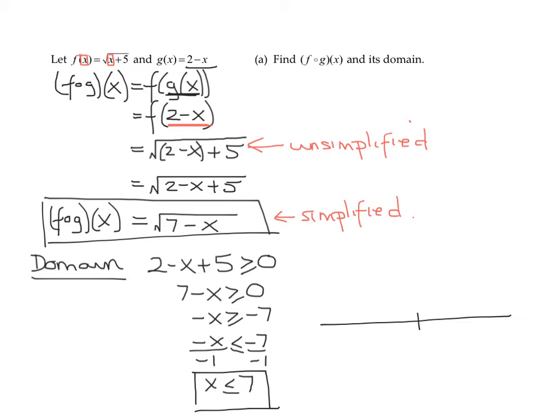Remember, x less than or equal to 7 is shaded to the left with a square bracket on it. So in interval notation, it's negative infinity with a parenthesis on the negative infinity and a square bracket on the 7. So here is my domain in interval notation.